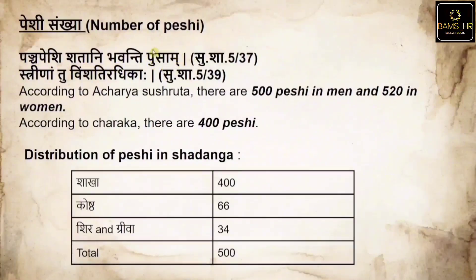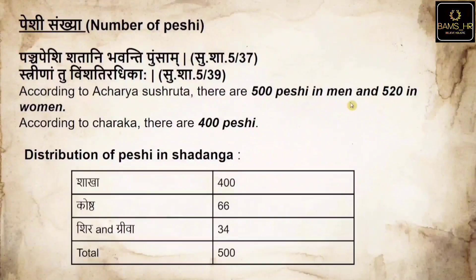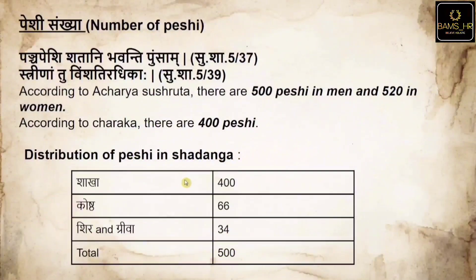Peshi Sankhya (number of Peshis): 'Pancha Peshi shatani bhavanti pumsam, sthri ni tu vimshati radhikha.' Acharya Shushita says 500 Peshi are present in men (Pumsa — Pancha five, Shatani hundred = 500), and Stri naam tu vimshati radhikha — 20 more, so 520 are present in women. According to Charaka, there are 400 Peshi.